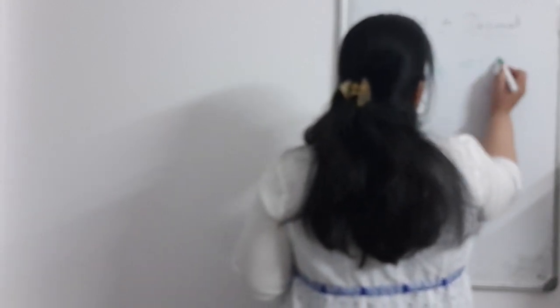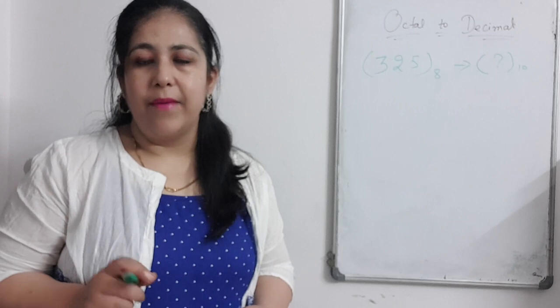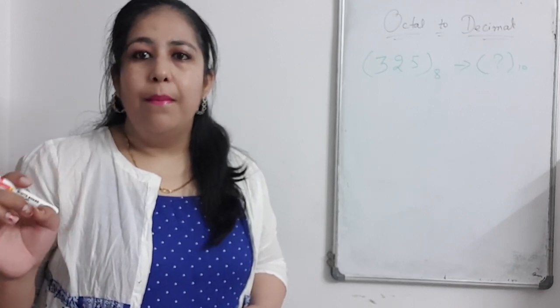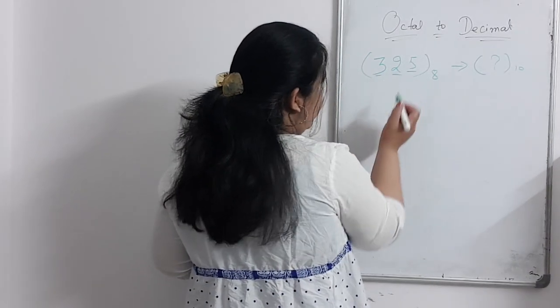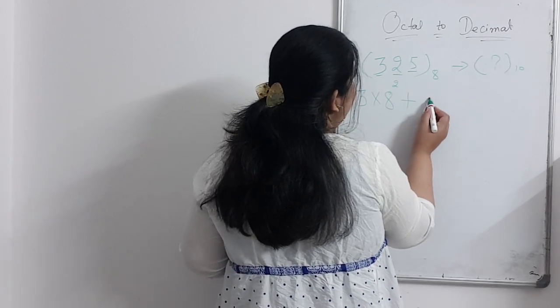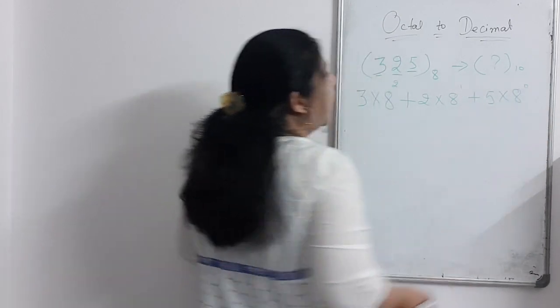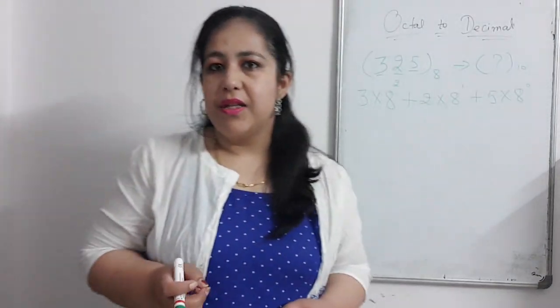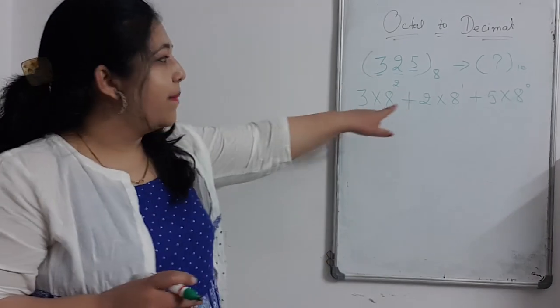I have the number 325 as an octal number, and we need to find its equivalent decimal value. We multiply each digit by 8's place values: the rightmost digit is at units place, then tens place, then hundreds place. So we do 3 multiplied by 8 raised to the power 2, plus 2 multiplied by 8 raised to the power 1, plus 5 multiplied by 8 raised to the power 0. For 3 digits, powers go from 2 down to 0.